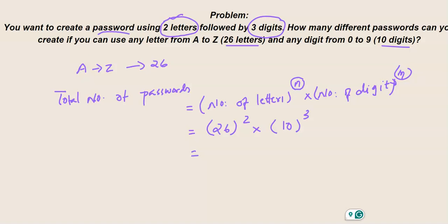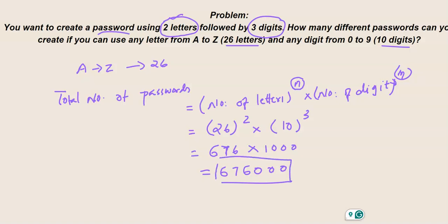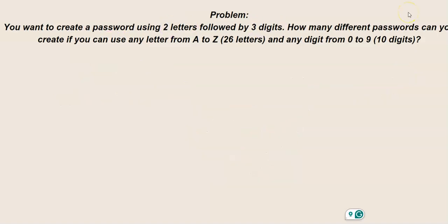26 to the power of 2 means 26 times 26, which equals 676. Then 676 times 10 to the power of 3 (which is 1000) gives 676,000. So you can create 676,000 different passwords using the rule of two letters followed by three digits. This is what the Fundamental Counting Principle does. Please follow, share, and subscribe. Thank you.